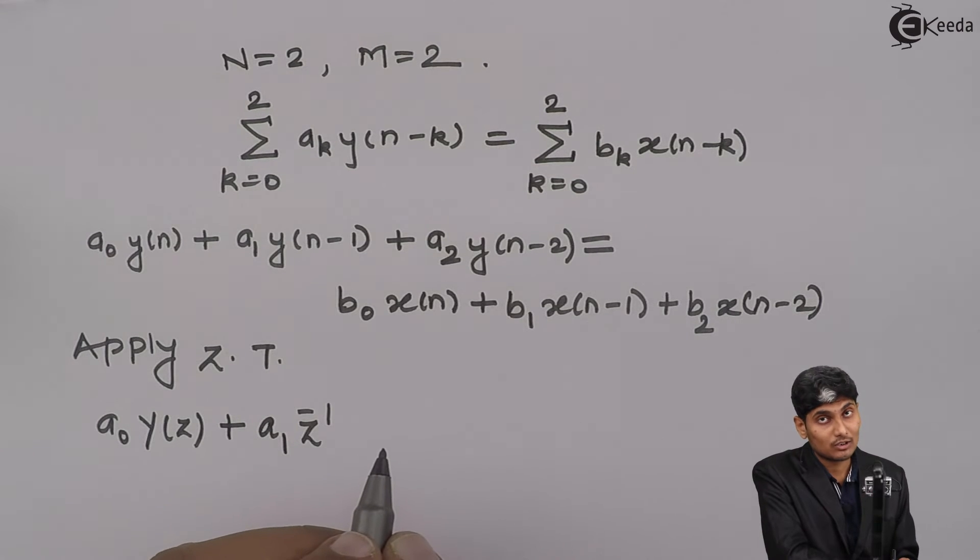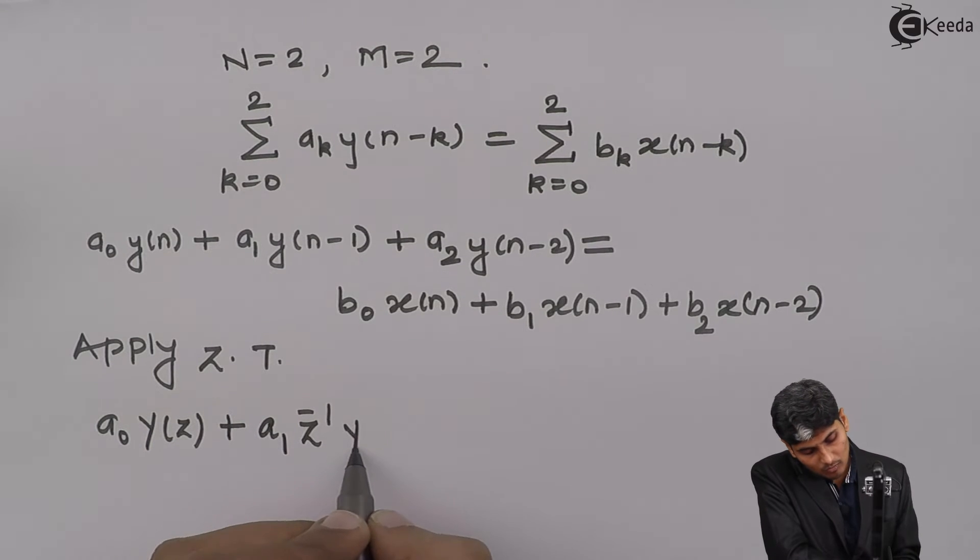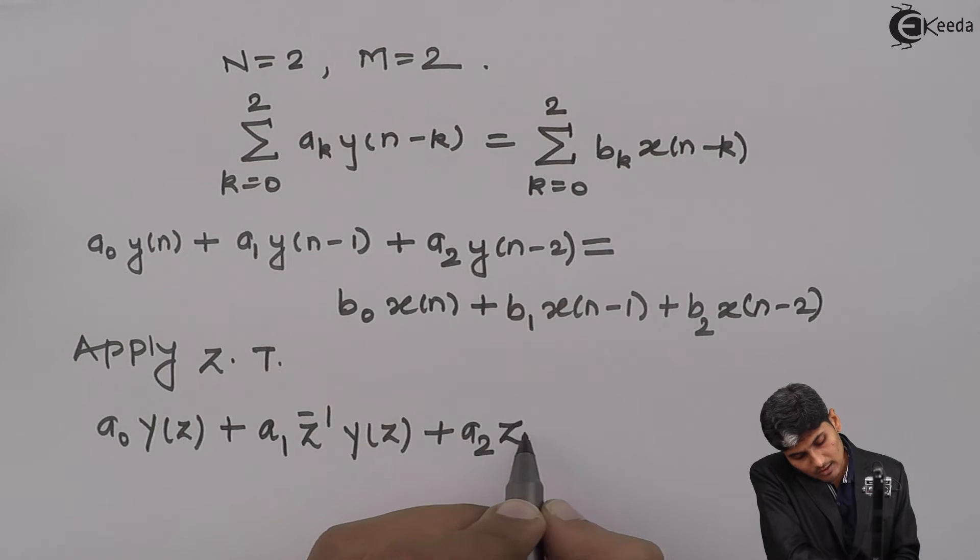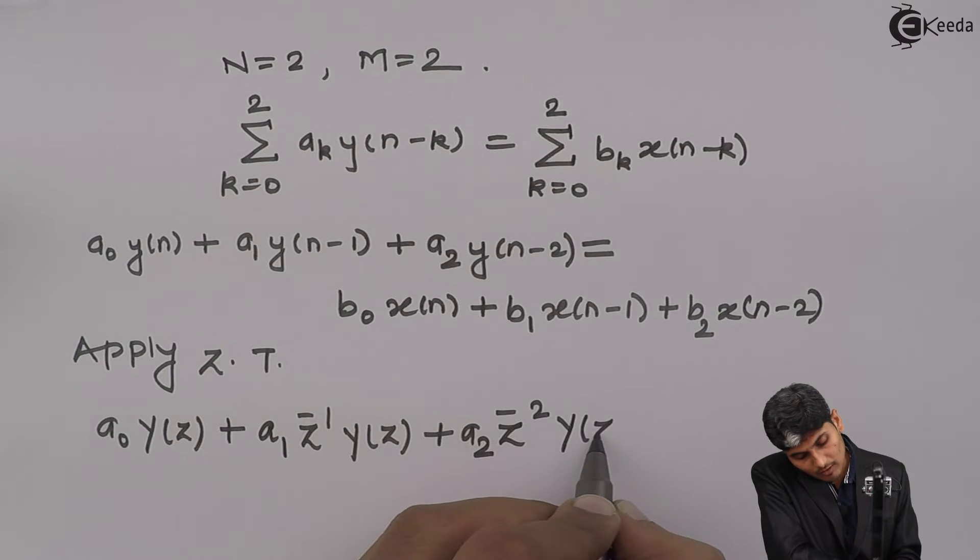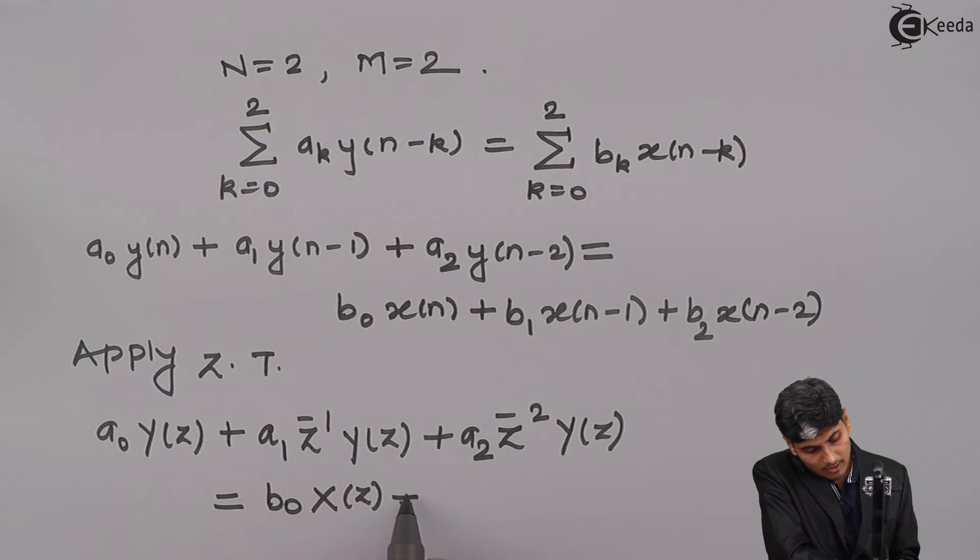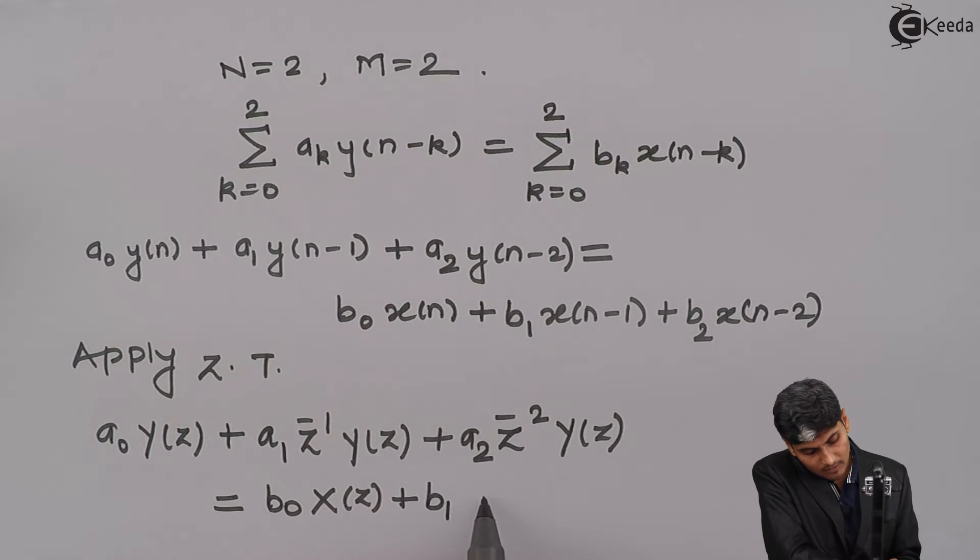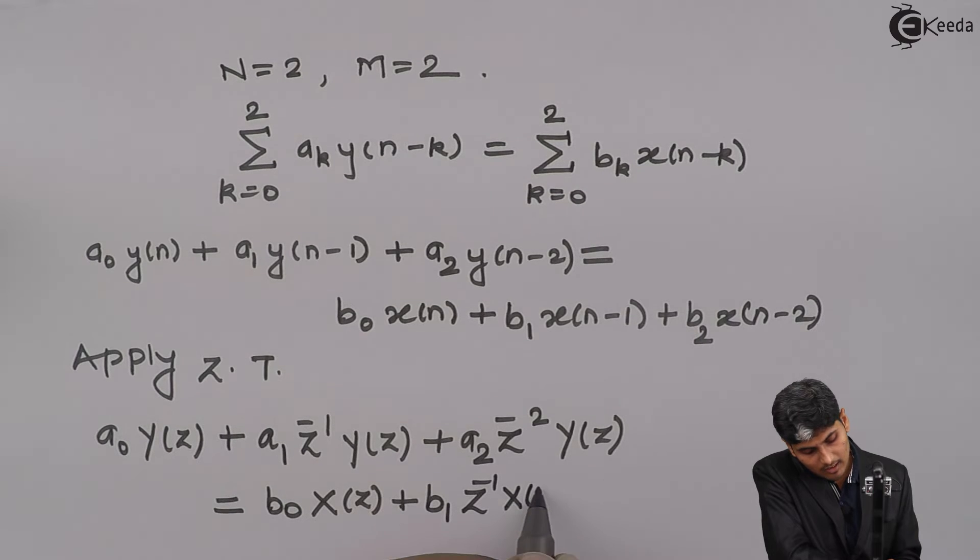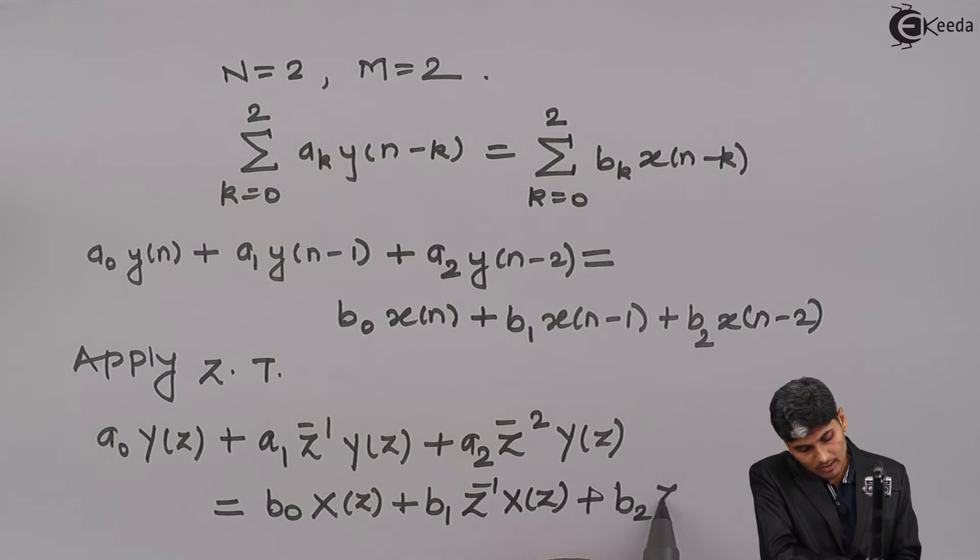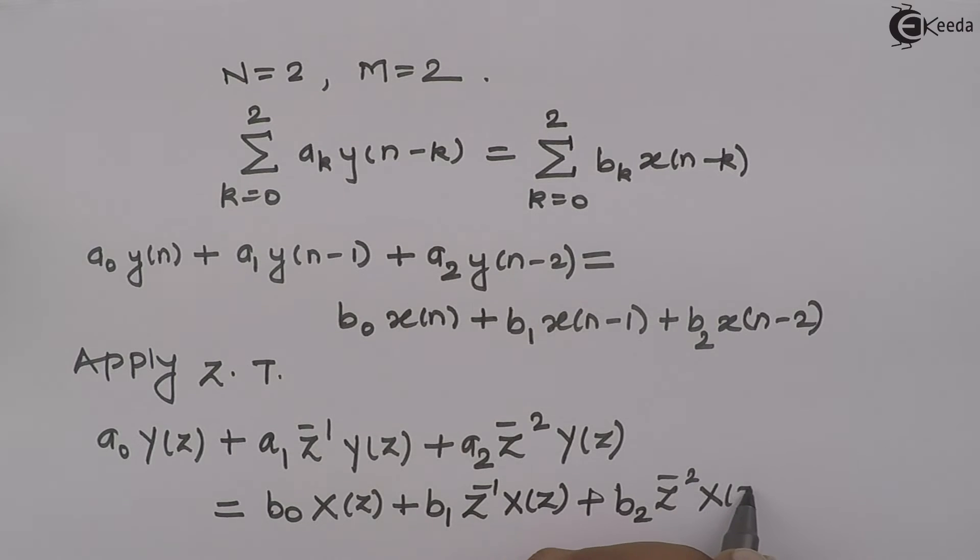Plus because of linearity property, I will have a_1 scaling property, z raised to minus 1, shifting property, Y(z) plus a_2 z raised to minus 2 Y(z) equals to b_0 X(z) plus b_1 z inverse X(z) plus b_2 z raised to minus 2 X(z).